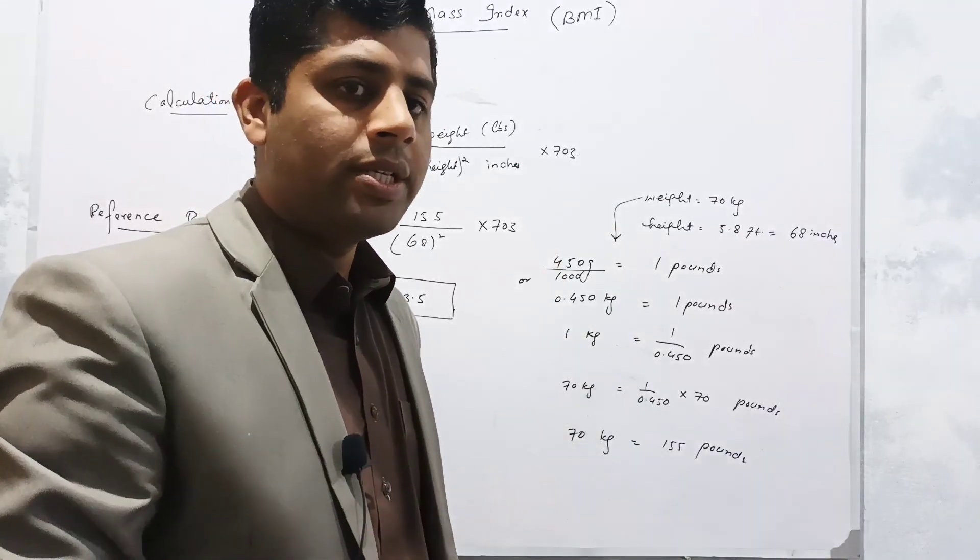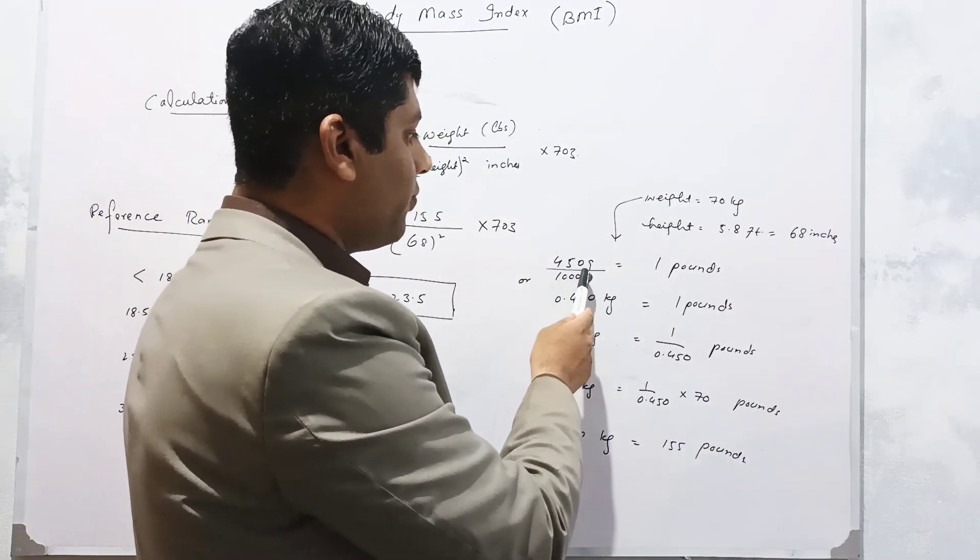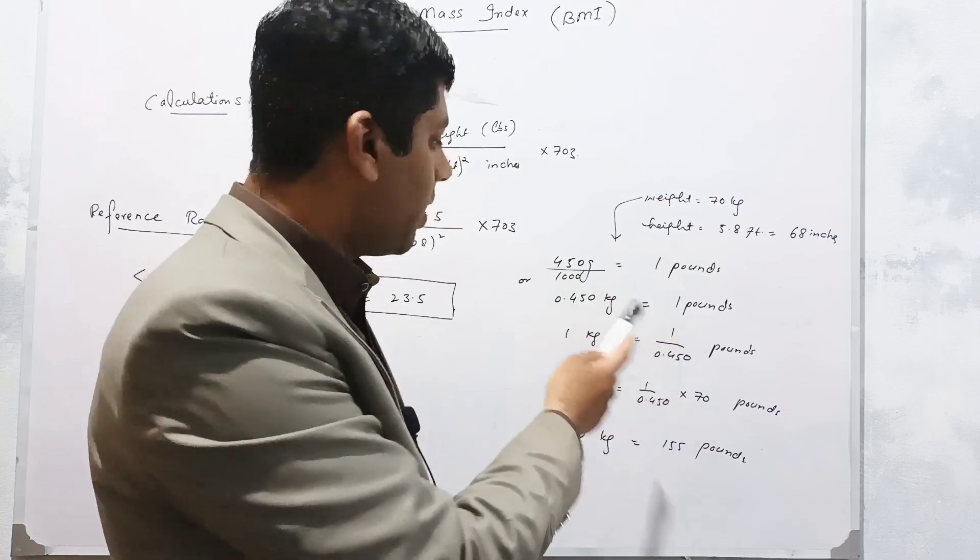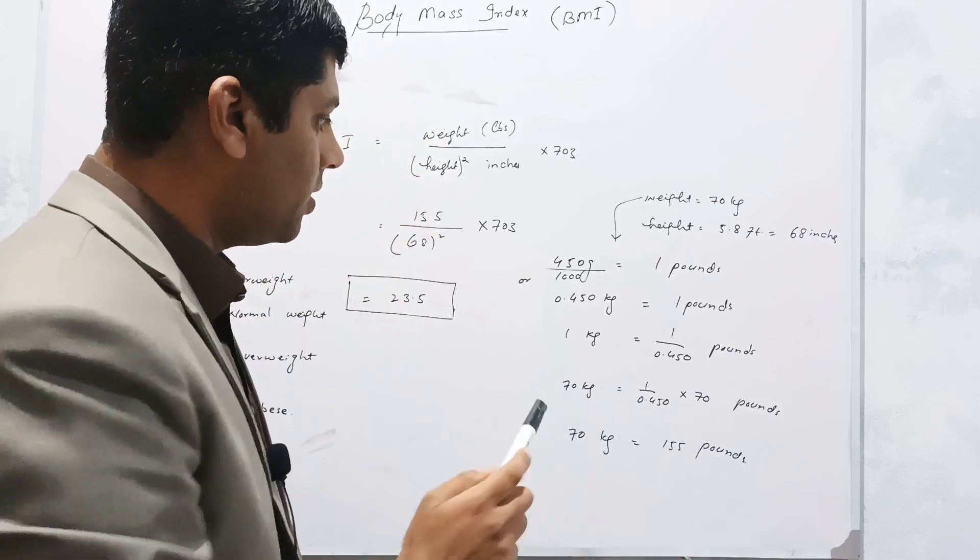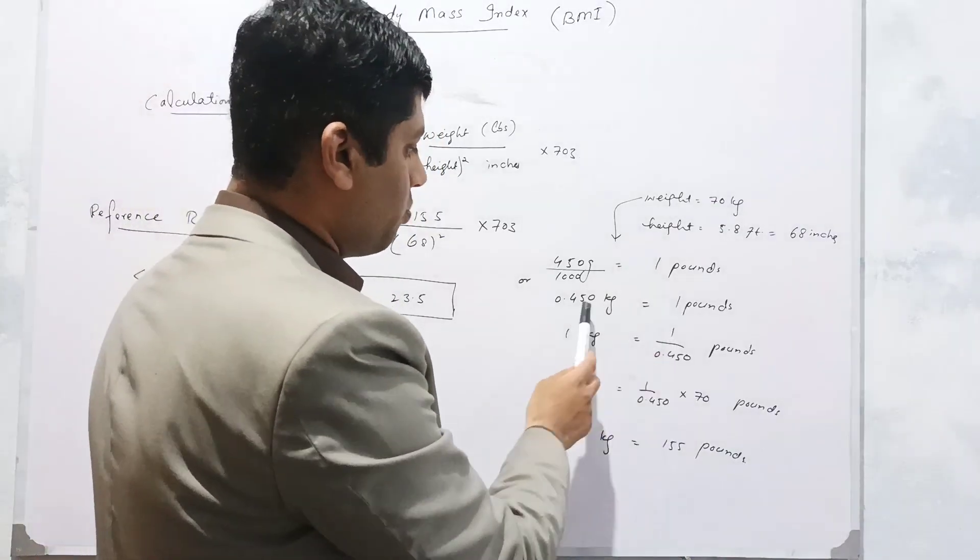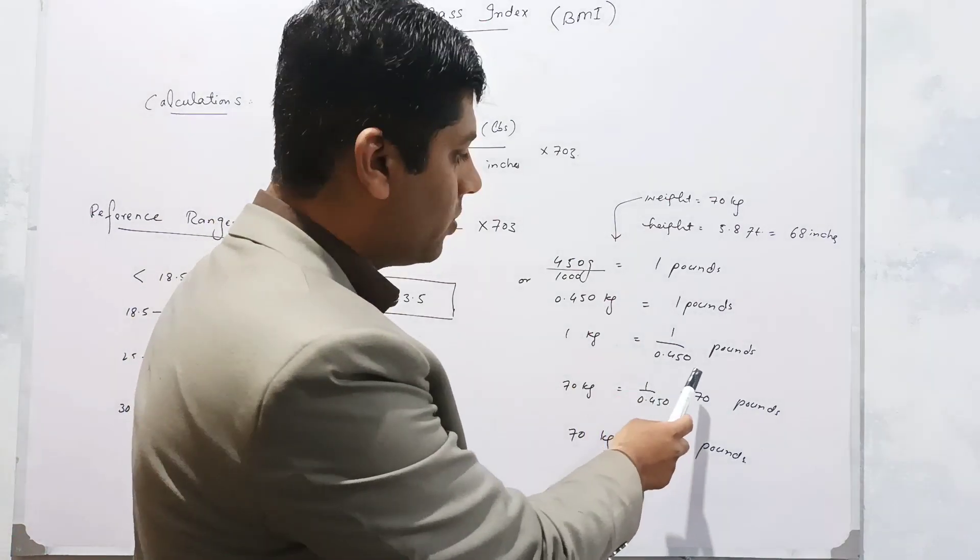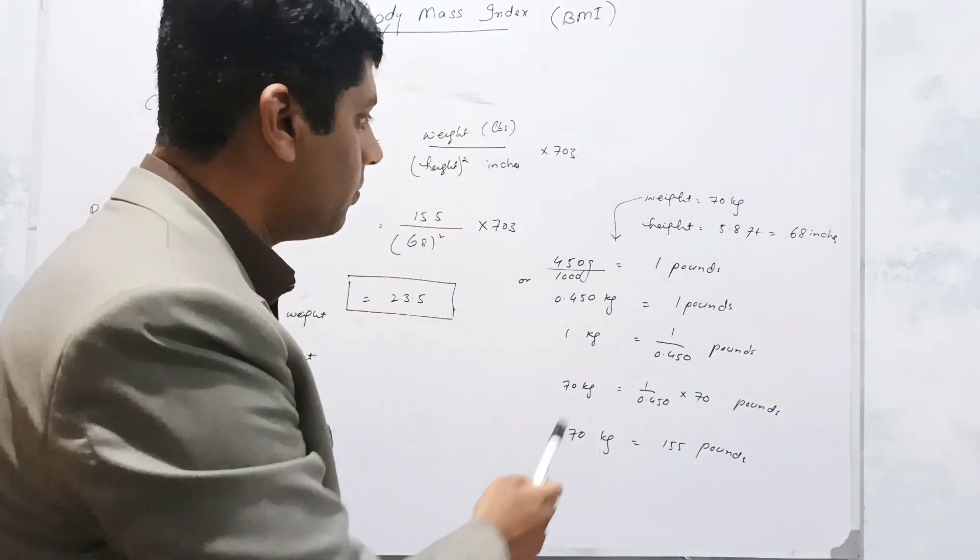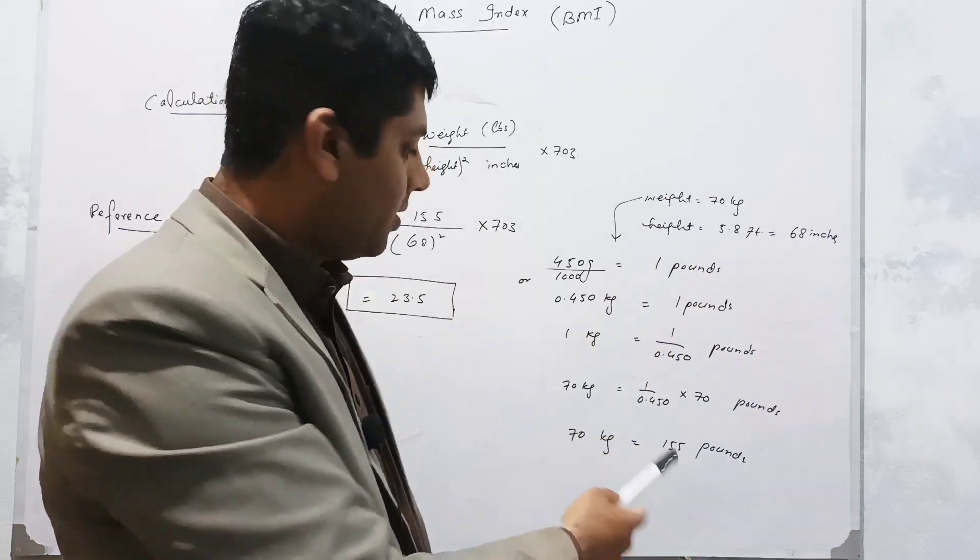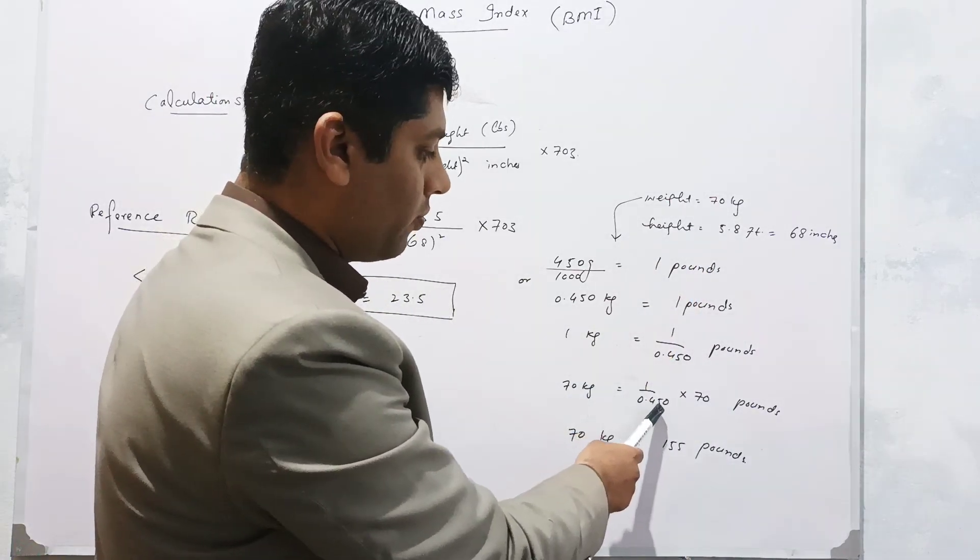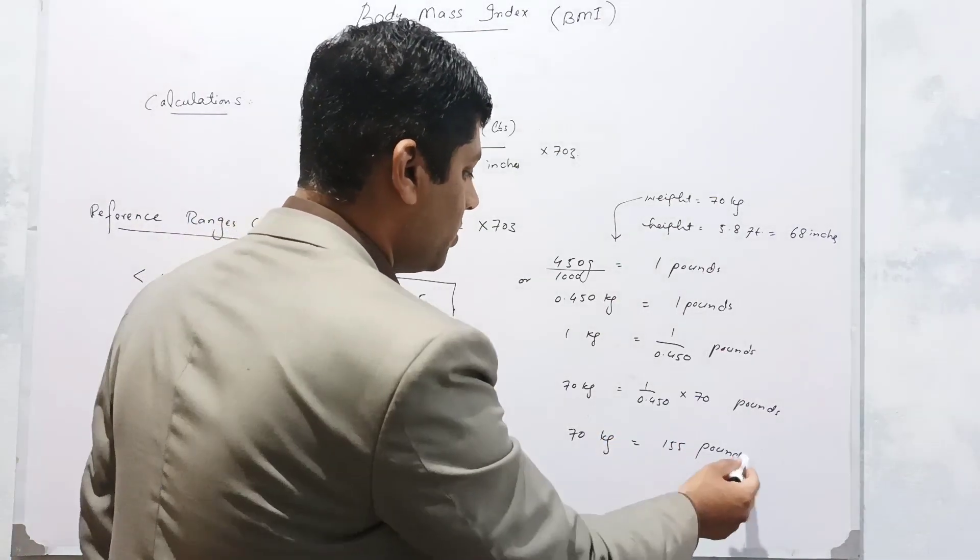First, we have to convert kg into pounds. For this purpose, you know that 450 grams equals 1 pound, or 0.450 kg equals 1 pound. For 1 kg, you divide both sides by 0.450, so 1 kg equals 1 over 0.450 pounds. For my weight, 70 kg, both sides are multiplied by 70, so 70 kg equals 1 over 0.450 times 70, which results in 155 pounds.